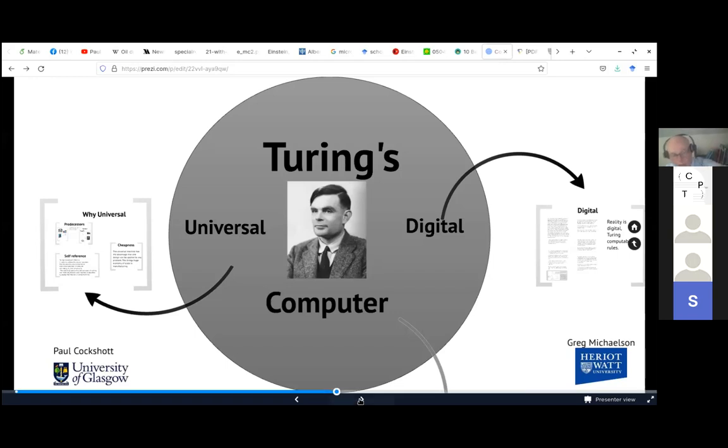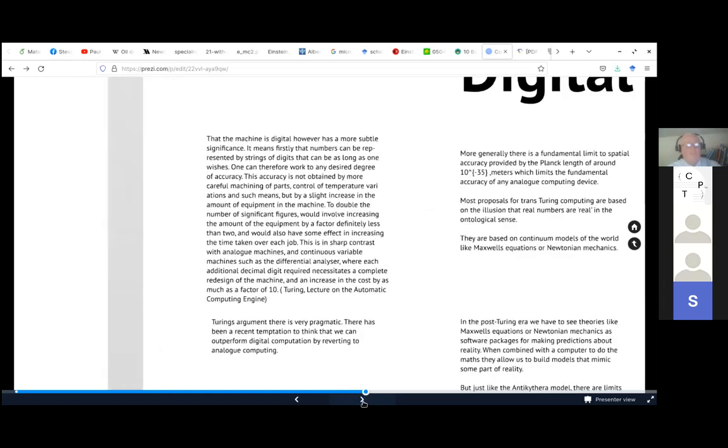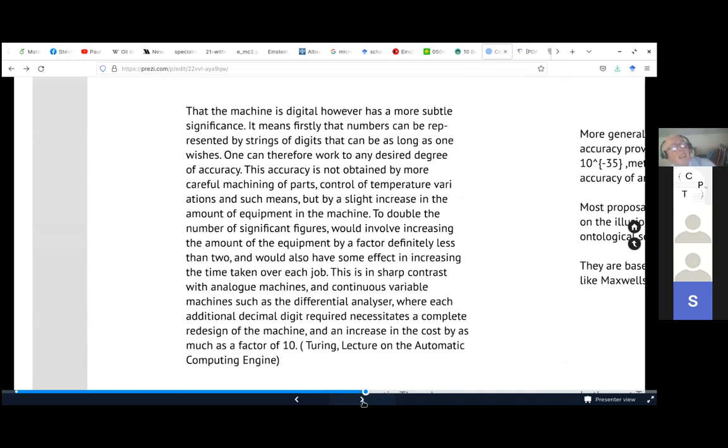I've been talking about the universality of his machine. I'm going to talk now about why the digital aspect is important. So the point is there's now a growing conception that reality itself is digital. You've seen this most explicitly in the work of people like Wolfram and Deutsch. But let's look at this in more detail. I'm quoting Turing now that the machine is digital, however, has a more subtle significance. It means first that numbers can be represented by strings of digits that can be as long as one wishes. One can therefore work to any desired degree of accuracy. This accuracy is not obtained by more careful machining of parts, control of temperature variations and such means, but by a slight increase in the amount of equipment in the machine.